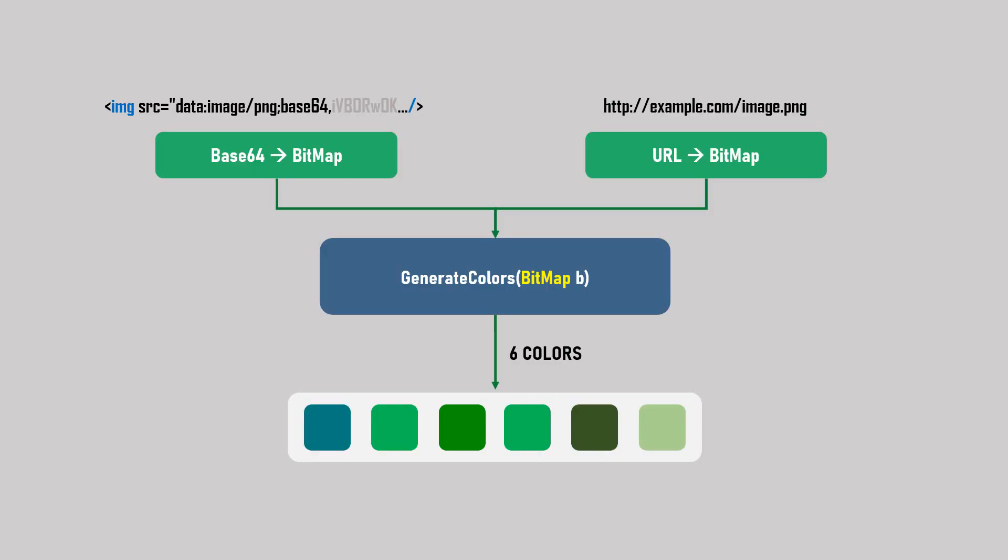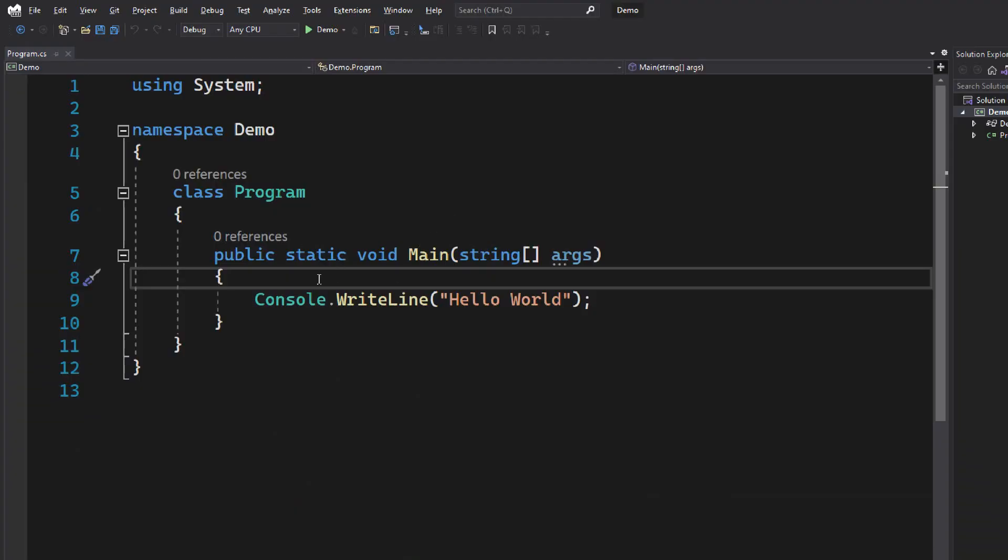Suppose you have an image — maybe it is in a base64 format or it is a URL that points to an image. What we are going to do today is convert that into a bitmap format. Once we have the bitmap, we pass it to our generateColors function, specifying the number of colors to generate, and the library will automatically identify the dominant colors and give us a list of hex value colors.